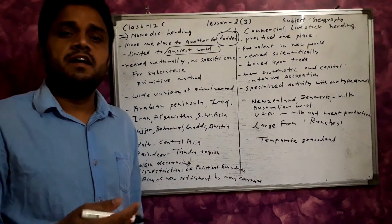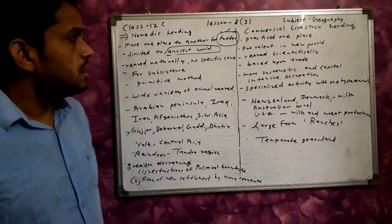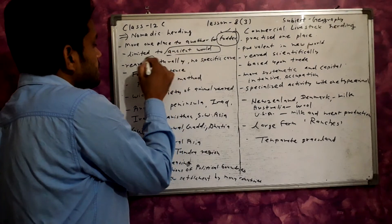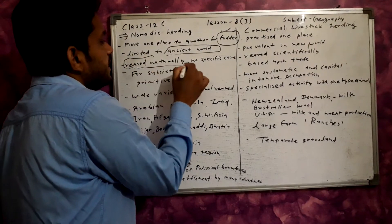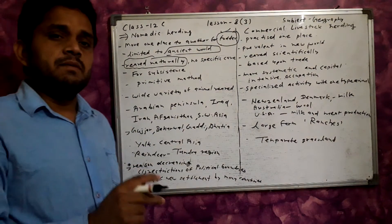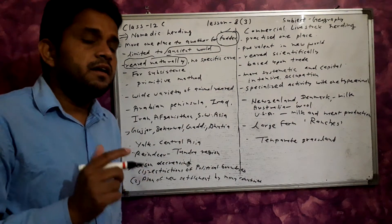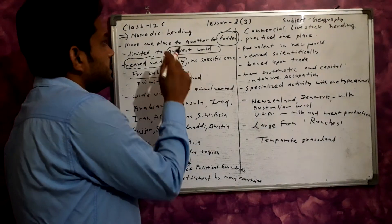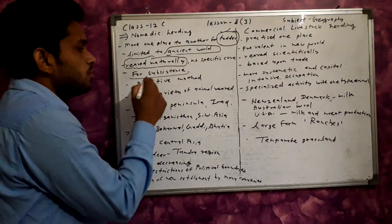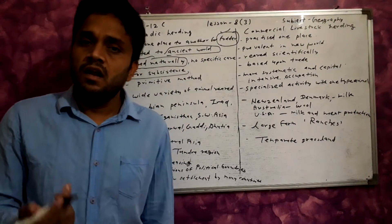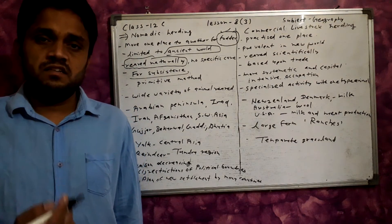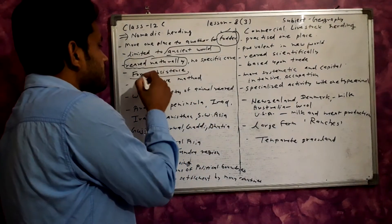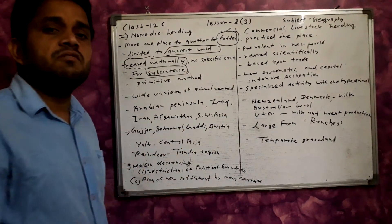The system of nomadic herding is now changing. In this type, the animals do not receive specific care — these animals are naturally reared without specialized attention. The main aim of nomadic herding is for subsistence, for the survival of life. The herder completes their necessities through this practice.